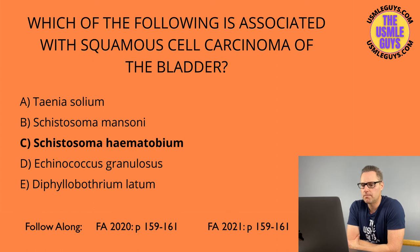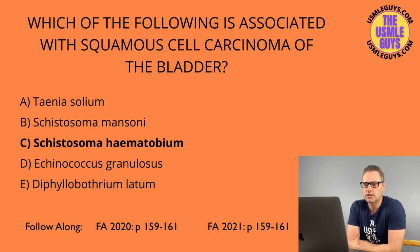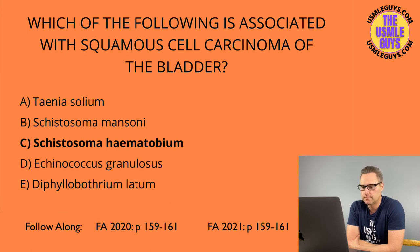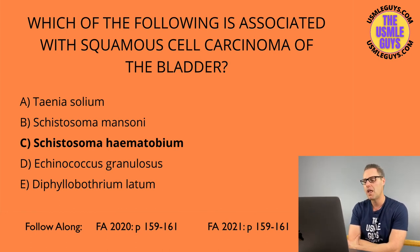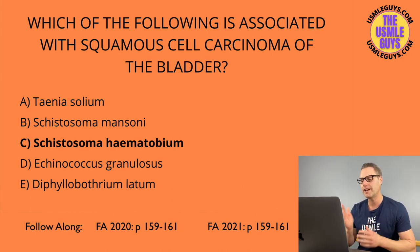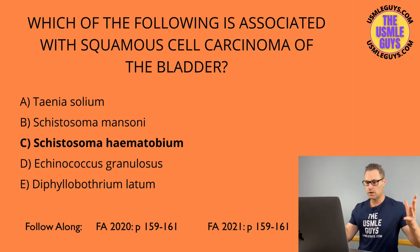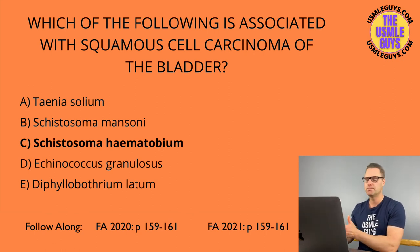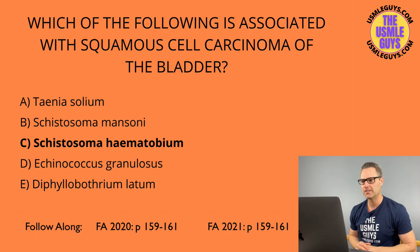Question eight: can cause cholangiocarcinoma? The answer is Clonorchis sinensis. And the last one: can cause myalgia and periorbital edema? The answer is Trichinella spiralis — also transmitted by undercooked pork. Big takeaway for the exam: make sure you know these high-yield worms. Big takeaway for your life: please do not serve people undercooked pork. See you on the next lecture.